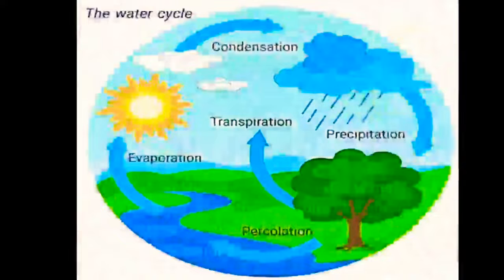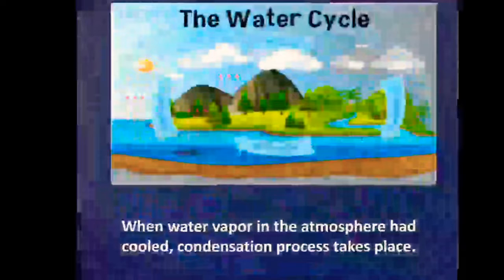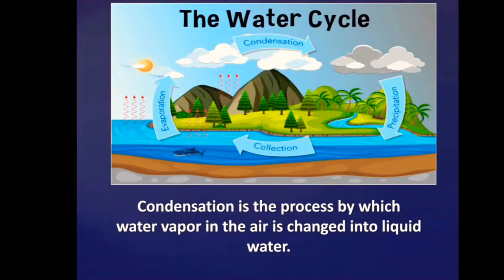After evaporation, what comes next? When water vapor in the atmosphere has cooled, condensation process takes place. Condensation is the process by which water vapor in the air is changed into liquid water. So, from water vapor, magiging liquid. At yun ay doon mangyayari sa clouds — nagkakaroon na tayo ng clouds.